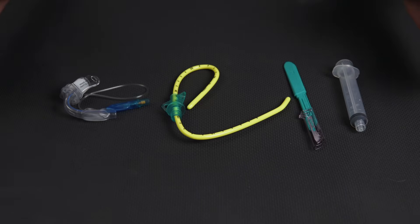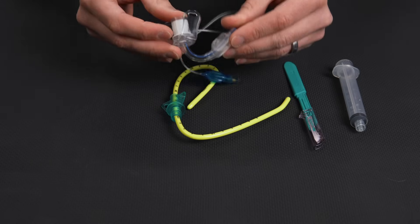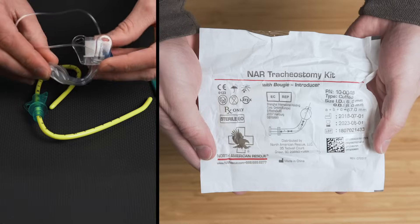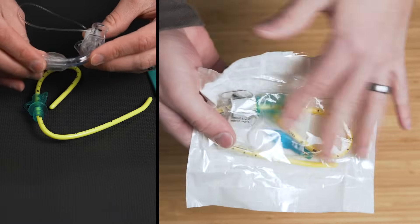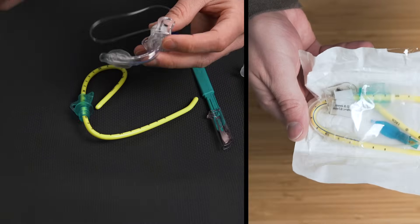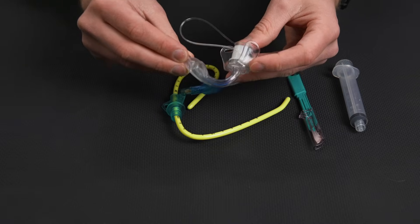So to perform this procedure, we need four main things. The first thing we need is the tube. Now this guy here is a specialized cric tube made by North American Rescue. I like using things that are actually made for this procedure because this prevents putting it in too deep, prevents cutting the tube down and causing any issues. It's just a lot simpler.